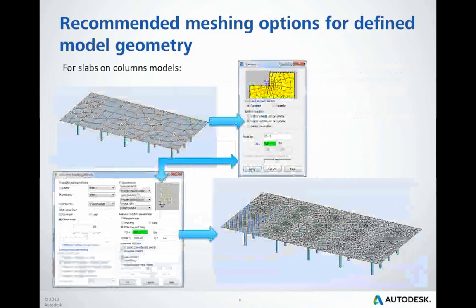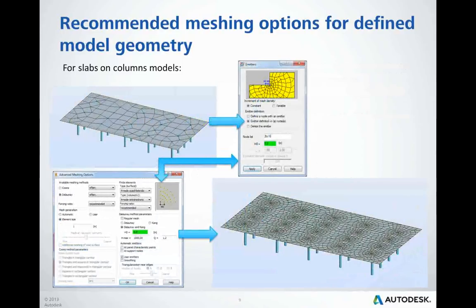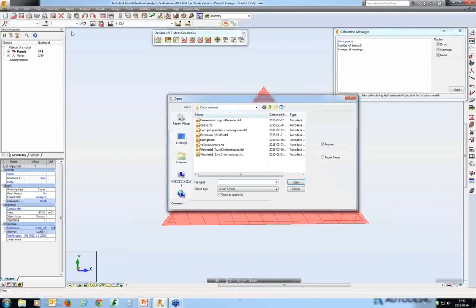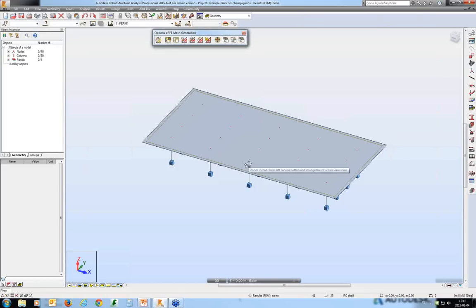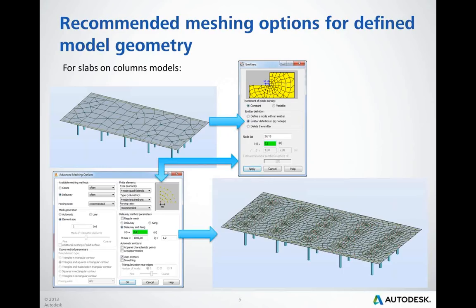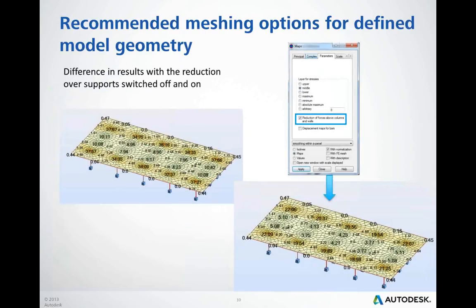I mentioned the situation of a slab supported by point supports or columns — this is the example where you can see the benefits of Kank meshing. Let me switch back to Robot and open another model. Before we focus on the Kank algorithm, let me show you the defaults. The point is that in finite element method-based programs, the smaller elements generated near characteristic points like point supports, the higher the values — for example, bending moments — you obtain.